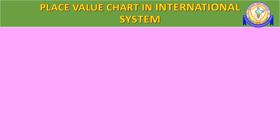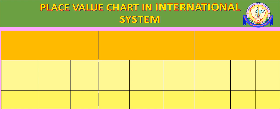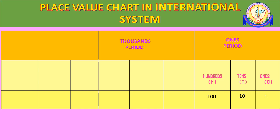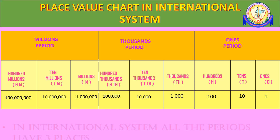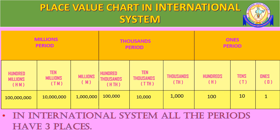In the International Place Value Chart, we draw a table initially. The first period is the ones period, similar to the Indian system, which consists of the ones, tens, and hundreds places. The second period is the thousands period, consisting of 3 places. The third period is the millions period, also consisting of 3 places. In the International System, all periods have 3 places.